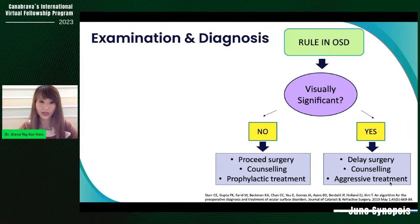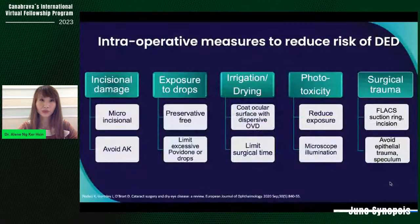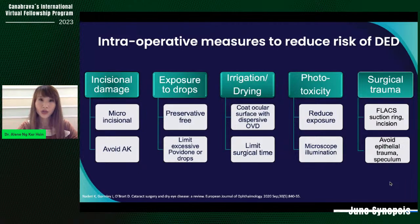The MMP9 test is positive if detected at more than 40 nanograms per milliliter — 85% sensitive and 94% specific. It is important to understand that signs and symptoms of dry eye do not always correlate. In patients with symptoms but no signs, a diagnosis of neuropathic corneal pain should be considered. Conversely, in asymptomatic patients with significant signs of OSD, neurotrophic conditions with poorer corneal sensitivity should be considered.